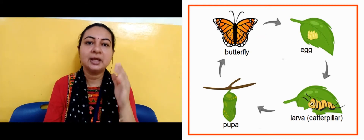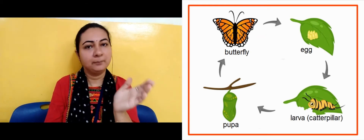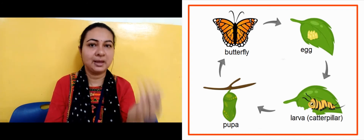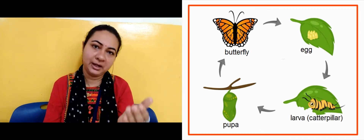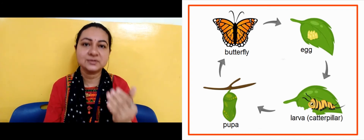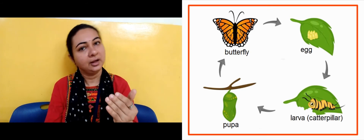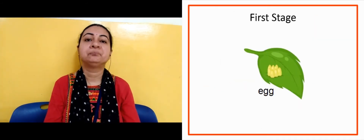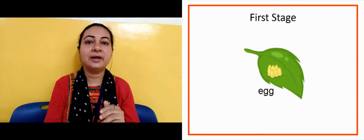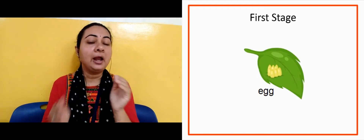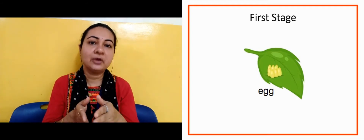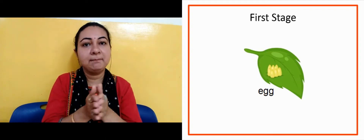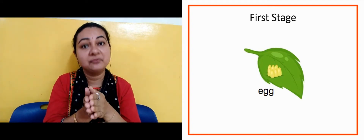Now let us see this in brief. The first stage in the life cycle of a butterfly is eggs. So what is the first stage for a butterfly? It is eggs.